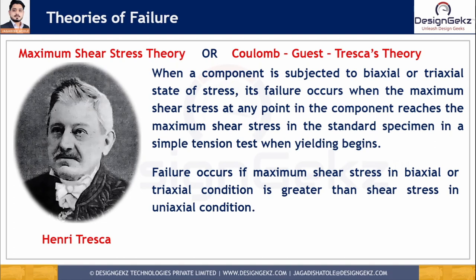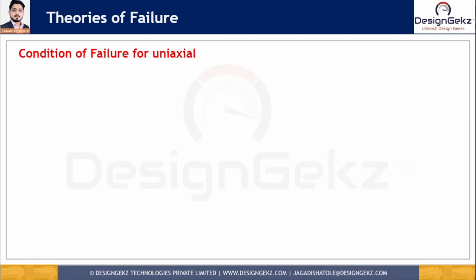Failure occurs if the maximum shear stress in a biaxial or triaxial state — tau_max — is greater than or equal to the uniaxial shear stress tau_uniaxial. We know the maximum shear stress at yielding for the uniaxial test is tau_uniaxial = σ_y / 2, that is yield stress divided by 2. Substituting this, we get tau_max ≥ σ_y / 2.